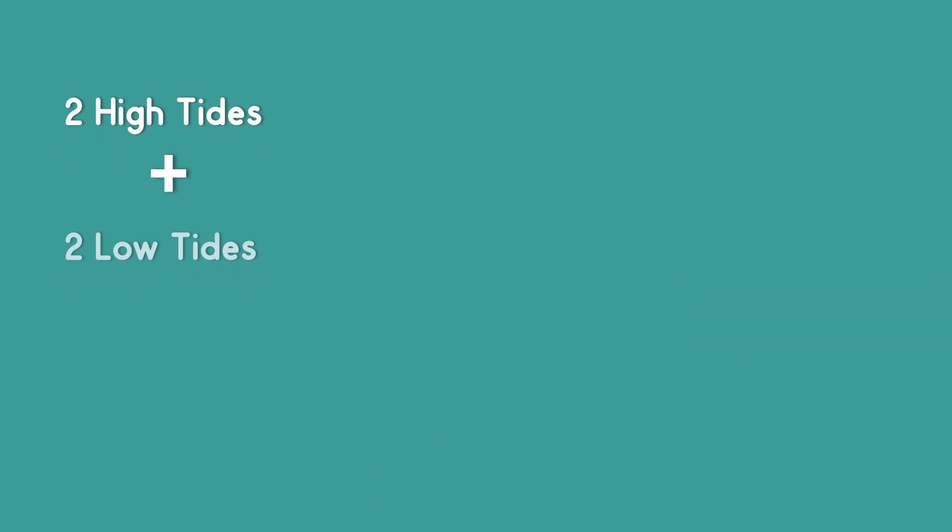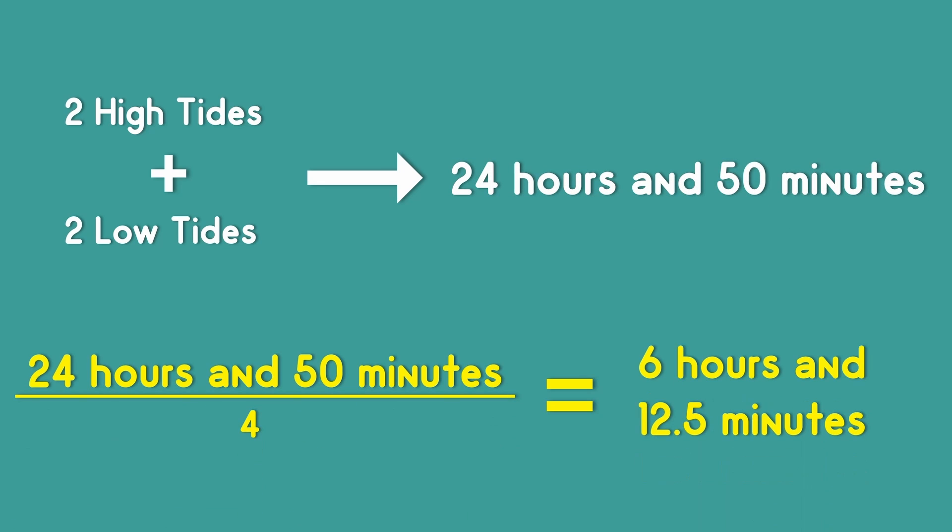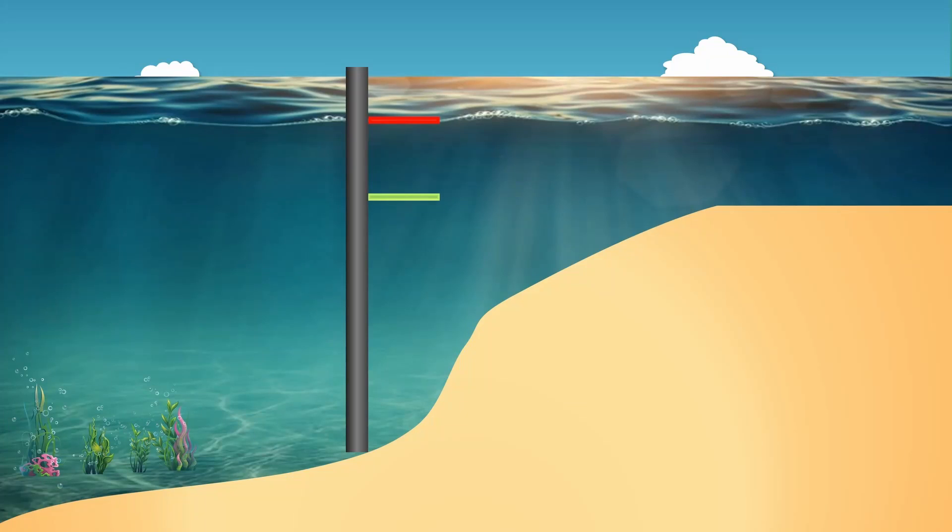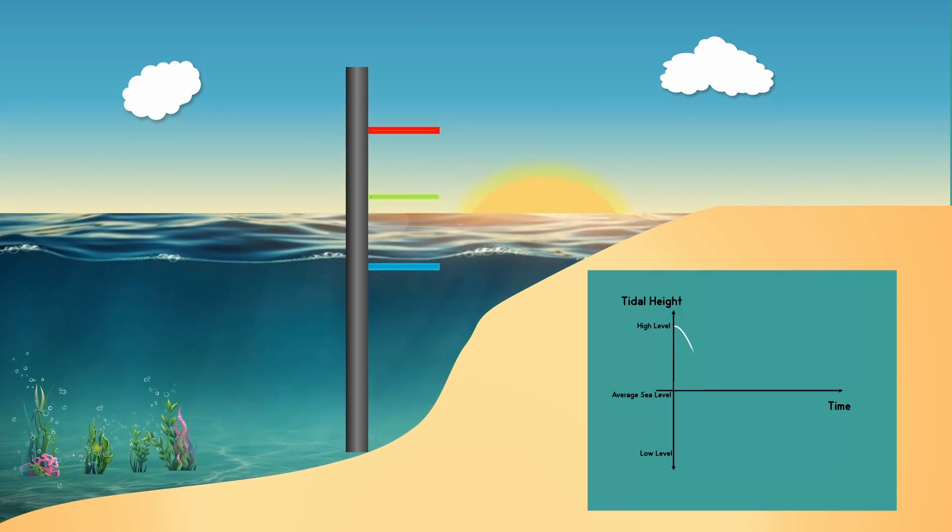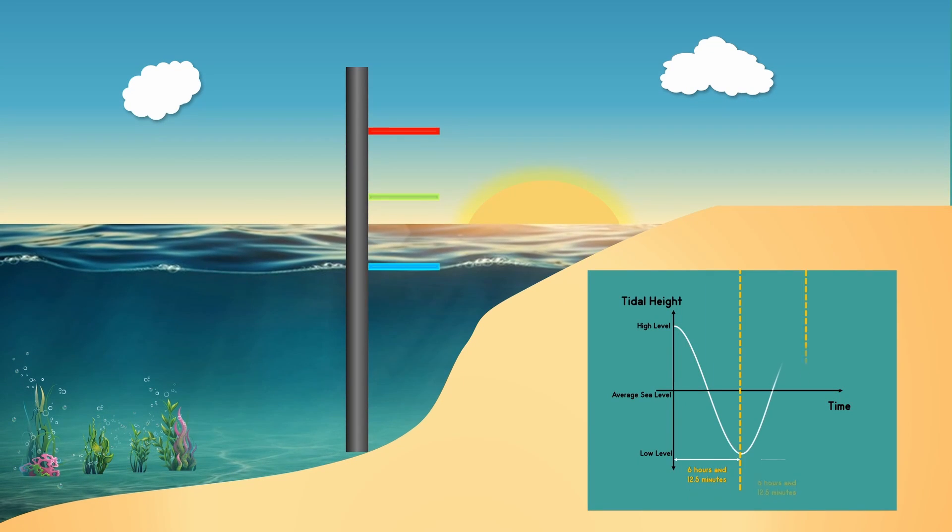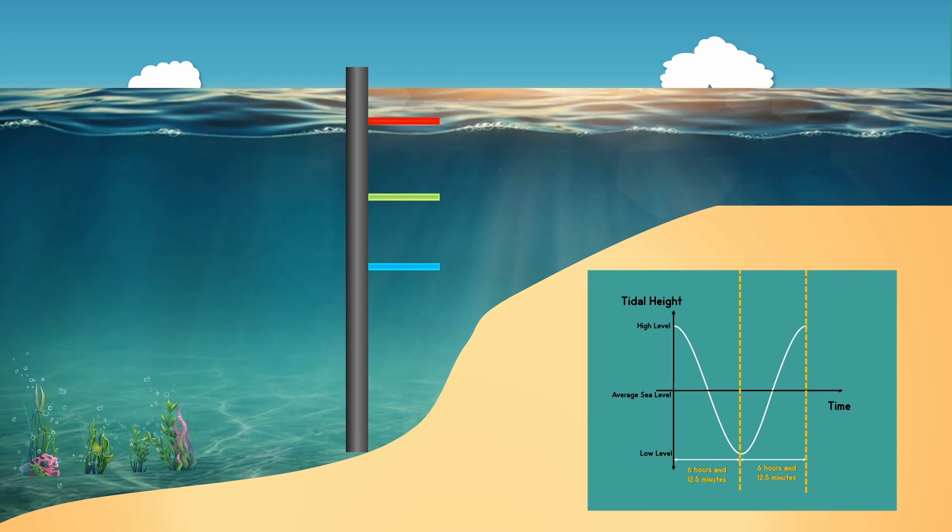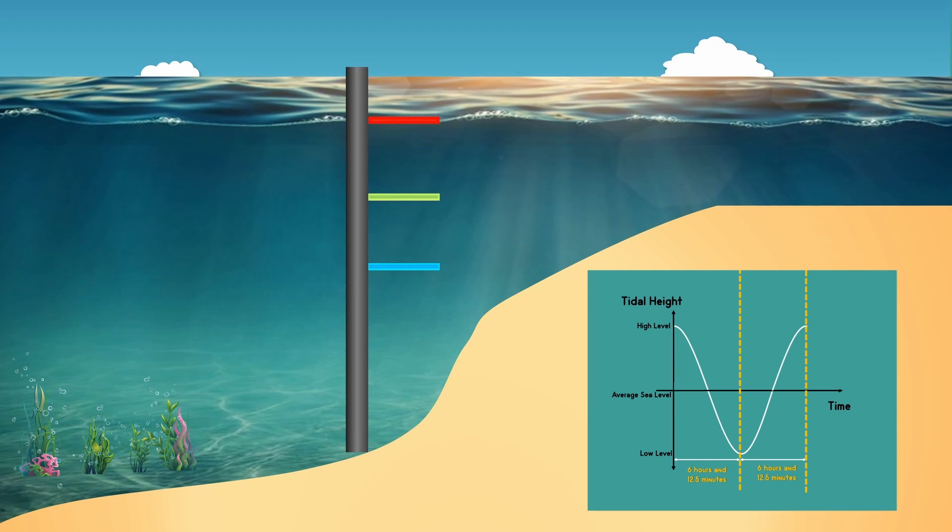Since two high tides and two low tides occur in 24 hours and 15 minutes, it takes 6 hours and 12.5 minutes for the water at the shore to go from high to low, and then another 6 hours and 12.5 minutes from low to high.